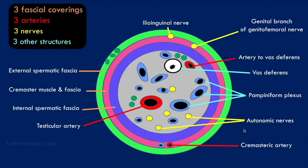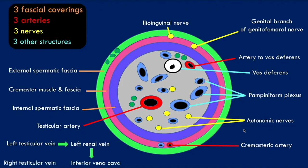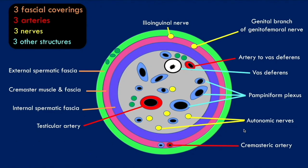The left testicular vein drains into the left renal vein, which then drains into the inferior vena cava, whereas the right testicular vein drains directly into the inferior vena cava. The lymphatic vessels also run within the spermatic cord and provide lymphatic drainage.